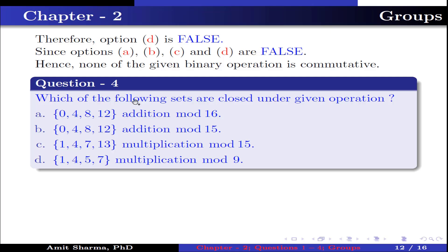Question number 4: Which of the following sets are closed under the given operation? Option A: {0, 4, 8, 12} under addition mod 16. Option B: {0, 4, 8, 12} under addition mod 15. Option C: {1, 4, 7, 13} under multiplication mod 15. Option D: {1, 4, 5, 7} under multiplication mod 9.